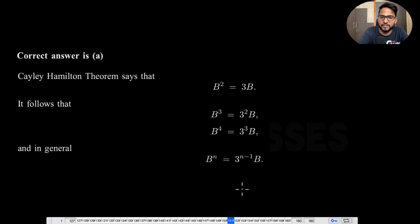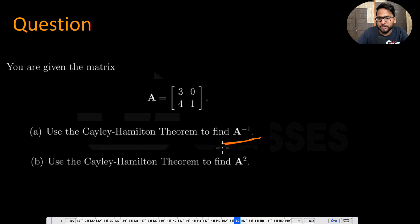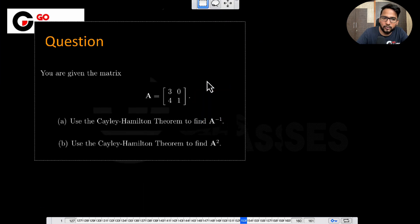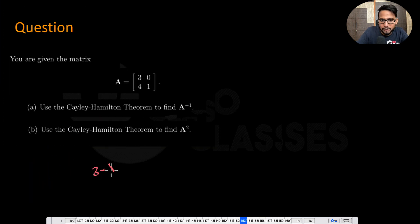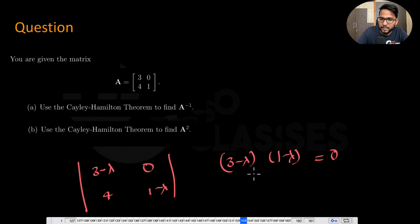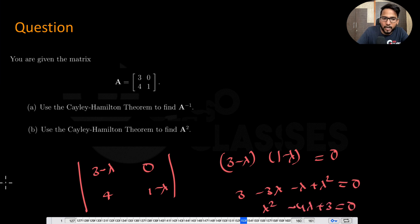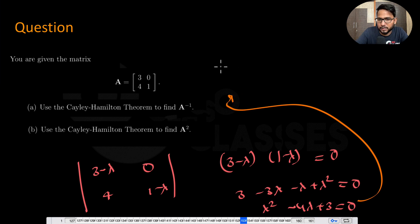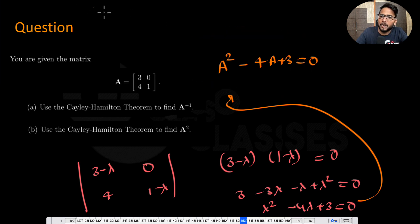For the given matrix, the characteristic equation is (3 - lambda)(1 - lambda) = 0, which expands to lambda^2 - 4*lambda + 3 = 0. By the Cayley-Hamilton theorem, substituting A for lambda gives A^2 - 4A + 3I = 0.